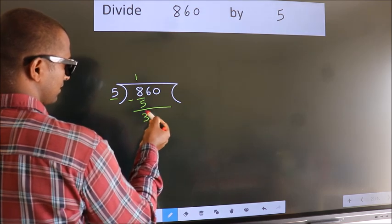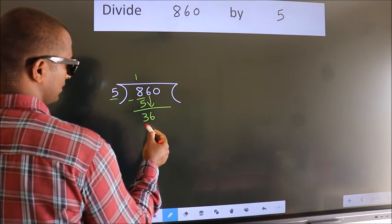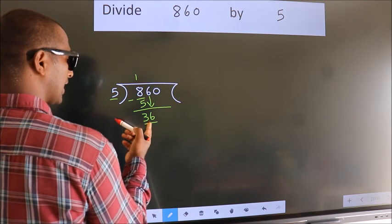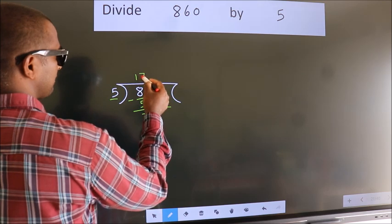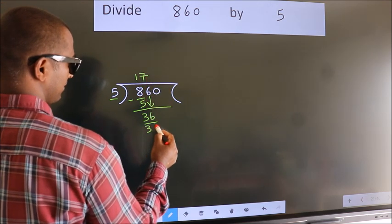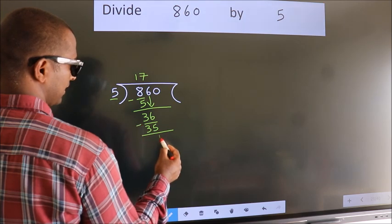After this, bring down the beside number. So, 6 down. So, 36. A number close to 36 in 5 table is 5 7s 35. Now, we subtract. We get 1.